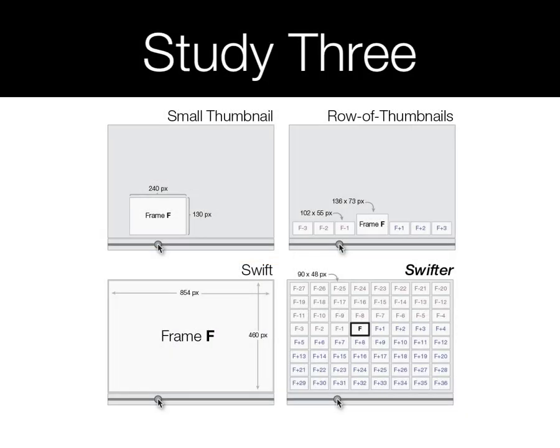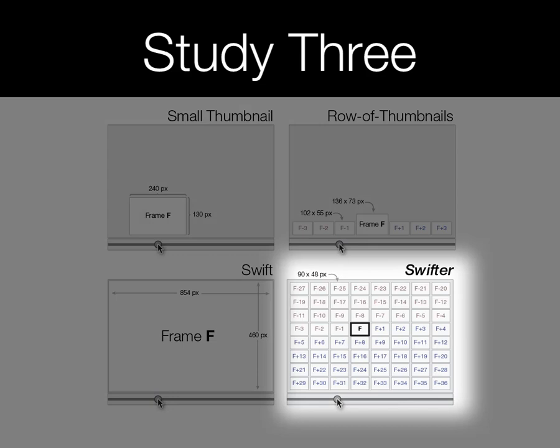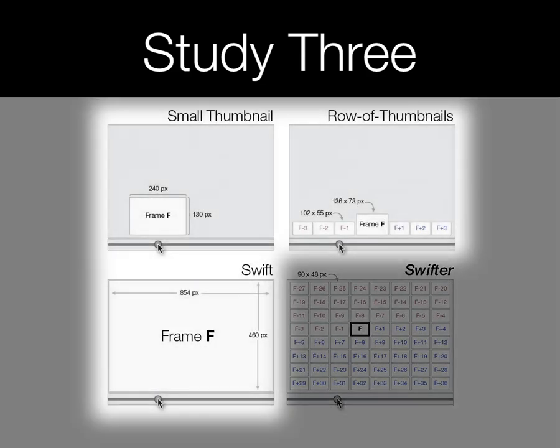Based on the results of our first two studies, in our third study we tested Swifter with an 8x8 grid and continuous scrolling against three existing techniques.